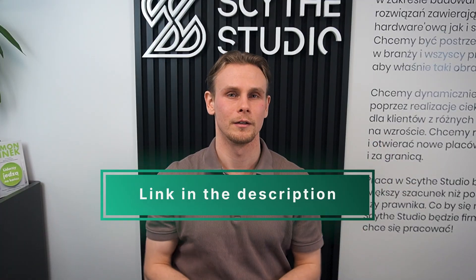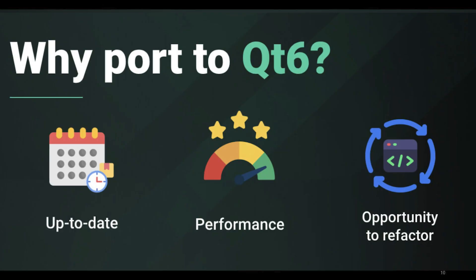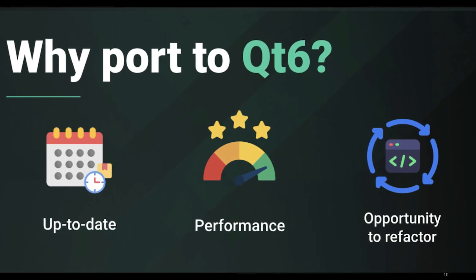For full details, check out the CMake Qt 5 and Qt 6 compatibility page — link in the description below. If you know any other changes worth mentioning, the comment section is yours. Now that we understand the key changes in Qt 6 compared to Qt 5, we can sum it up with three main reasons why porting to Qt 6 is worth it: staying up to date, better performance, and the opportunity to refactor your code.